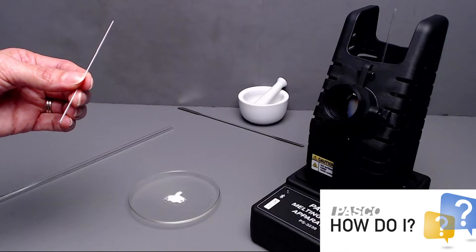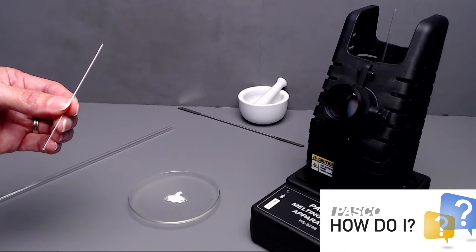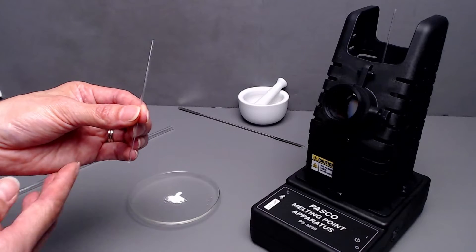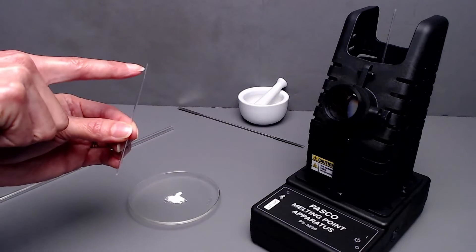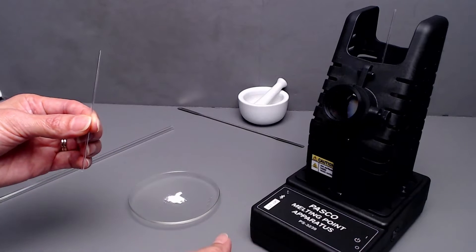How do I prepare a capillary tube to study melting point with the melting point apparatus? This is a melting point capillary tube with an open end and a closed end. It comes with the melting point apparatus.